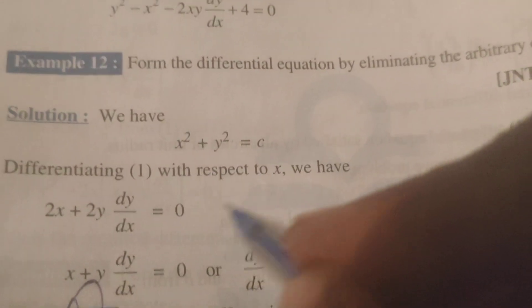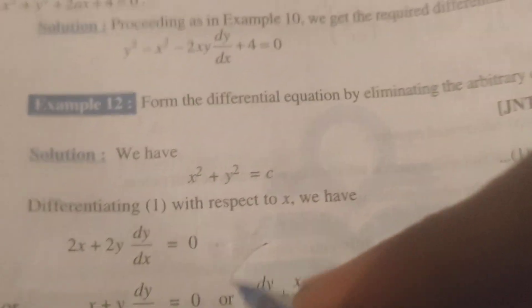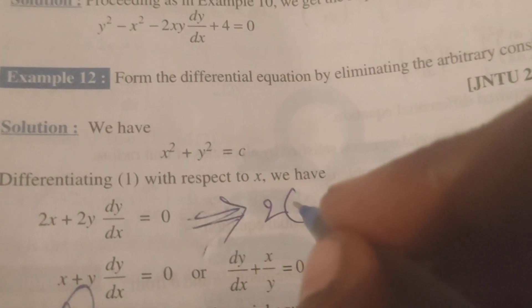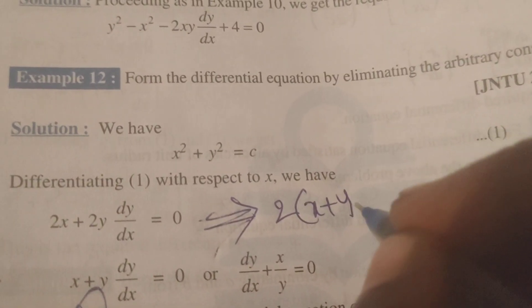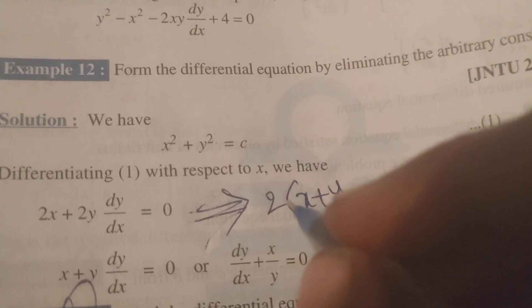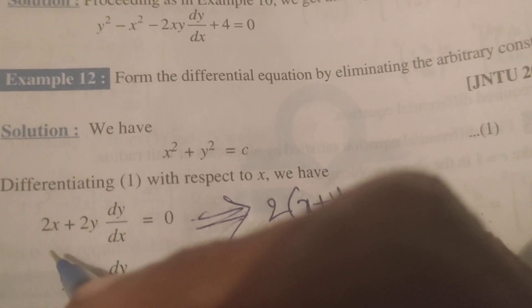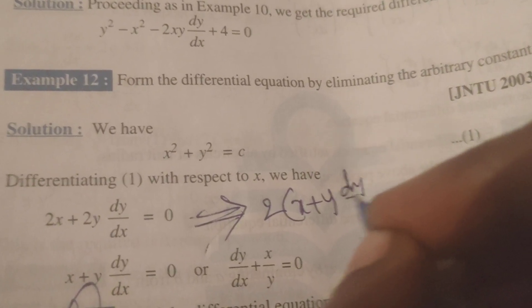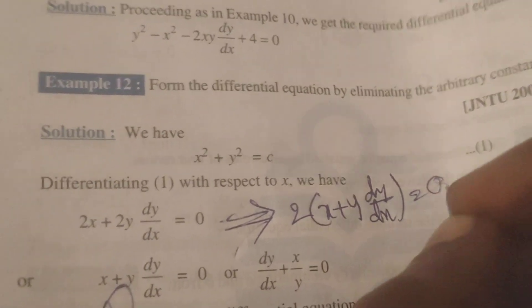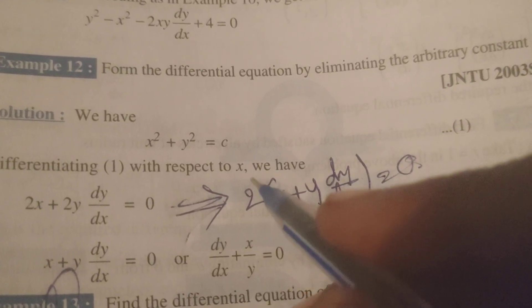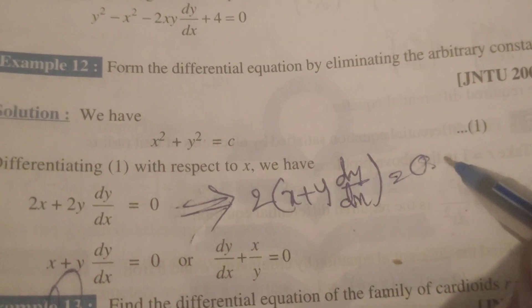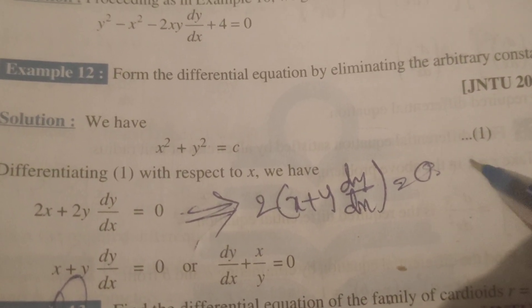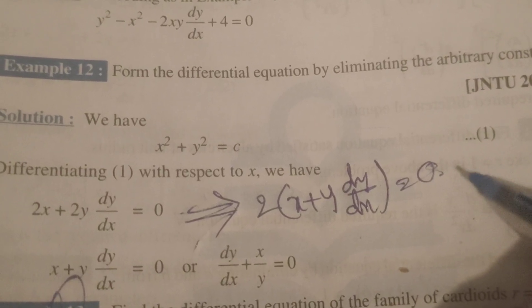Here 2 is a common factor, therefore 2 into x plus y dy/dx equals to 0. Dividing both sides by 2, we will get x plus y dy/dx equals to 0.